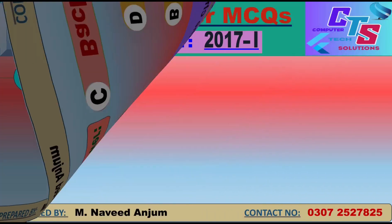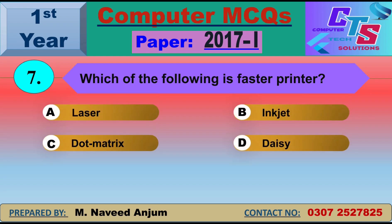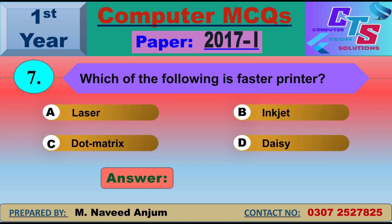Question number 7: Which of the following is the fastest printer? The fastest printer type is the non-impact printer — specifically the laser printer. Inkjet is also a non-impact printer but it is slower than laser. So option A — laser printer — will be the right answer.